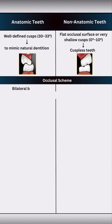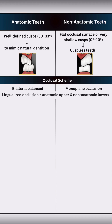Anatomic teeth are ideal for bilateral balanced occlusion, where contact must occur bilaterally in all movements. Non-anatomic teeth work best in monoplane occlusion, especially in flat ridge cases. Lingualized occlusion usually combines anatomic upper teeth with non-anatomic lower teeth.